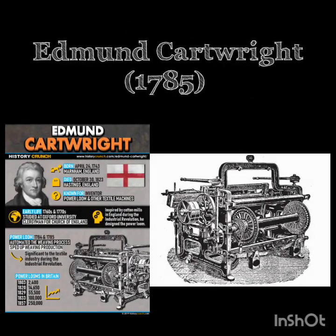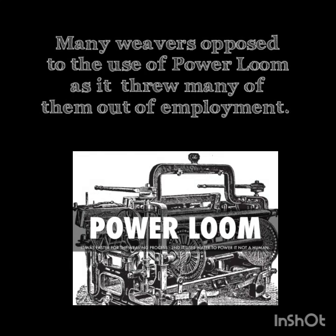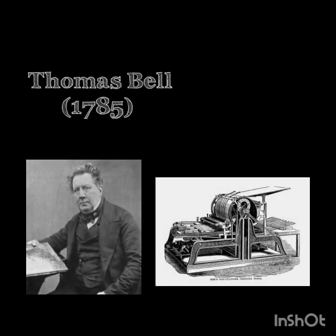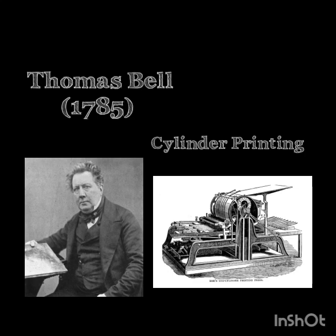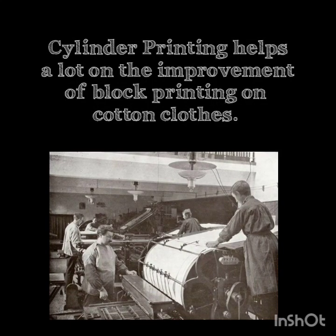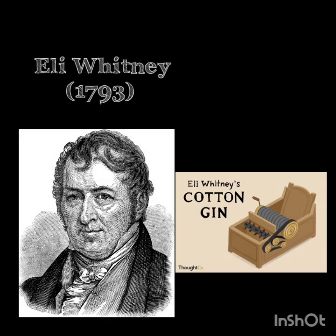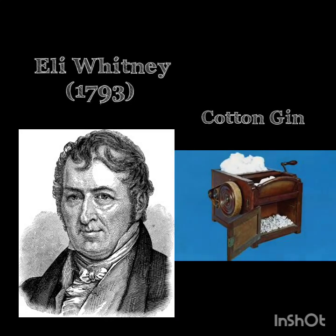In 1785, Edmund Cartwright patented his power loom. However, many weavers strongly opposed its use as it threw many of them out of employment. Also in 1785, Thomas Bell invented the cylinder printing of cotton goods, which greatly improved upon block printing on cotton cloth. In 1793, the available supply of cotton yarn was increased by Eli Whitney's cotton gin.